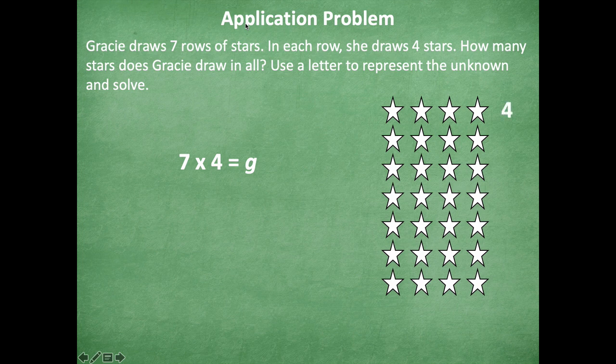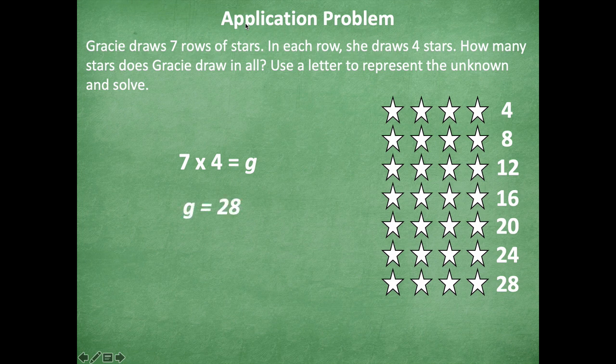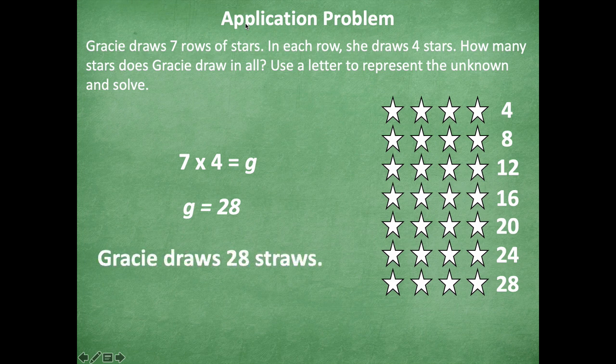4, 8, 12, 16, 20, 24, 28. So G equals 28 for this problem. All right, let's keep going. Gracie draws 28 stars. It's always good to use that RDW process where you are writing your answer in a complete sentence.